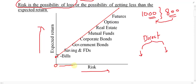Risk starts from zero and increases as you move right on the graph — for example, zero percent, five percent, ten percent risk. As much as you go to the right side, risk increases, and definitely as much as you go upward, return also increases.